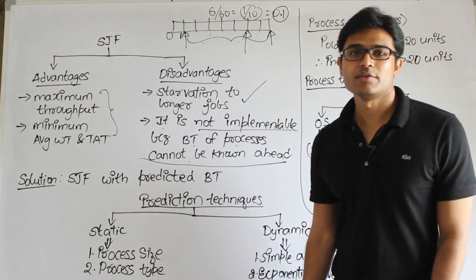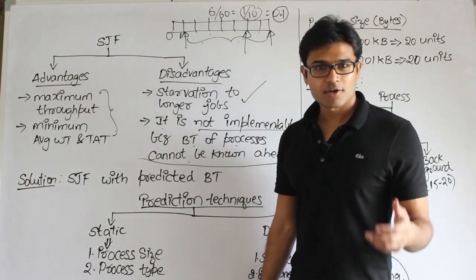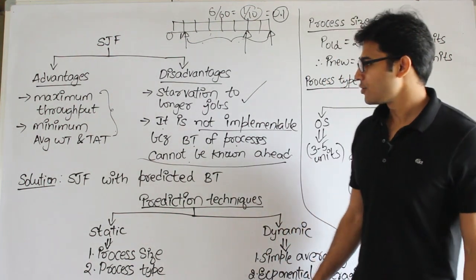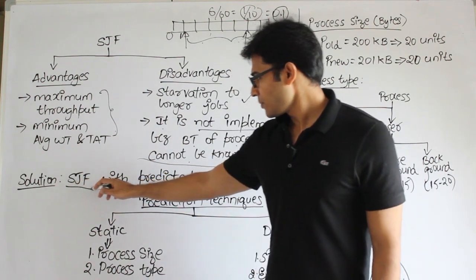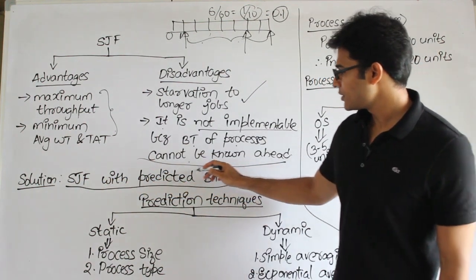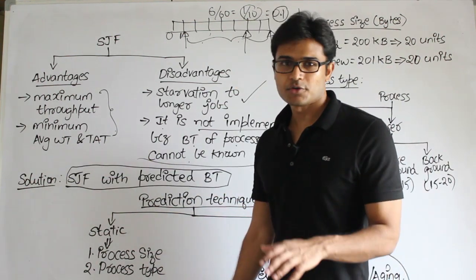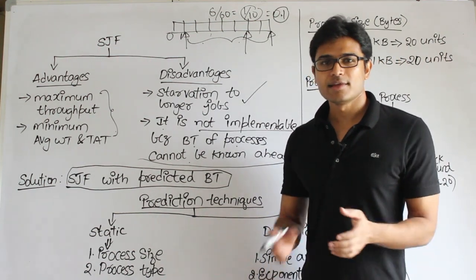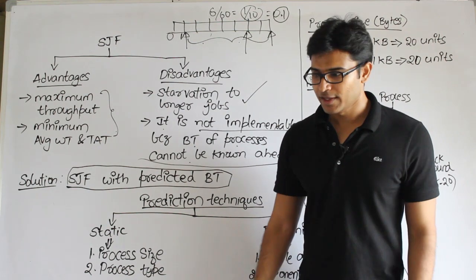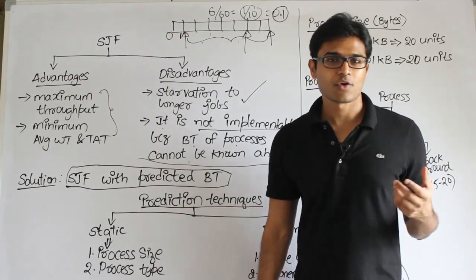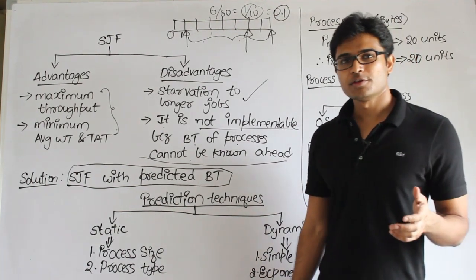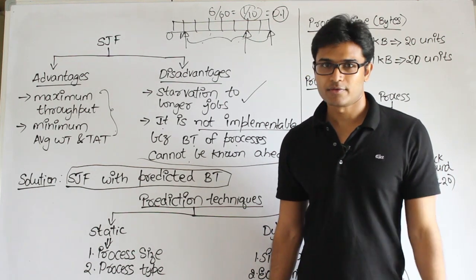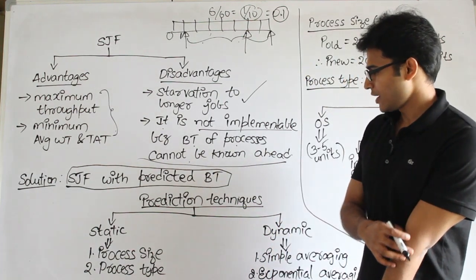Since we cannot implement SJF exactly, we are not going to leave it completely. What we can do is approximate it — since we cannot know the burst times exactly, we will predict them. This gives us Shortest Job First with predicted burst times. It is an approximate algorithm, not the actual one, giving a solution closest to optimal.